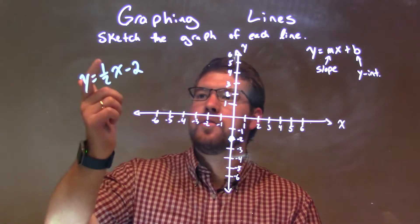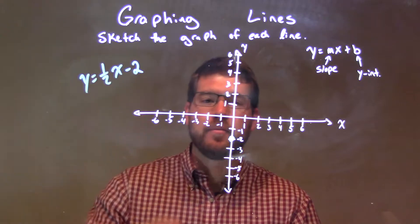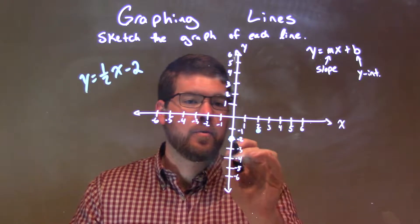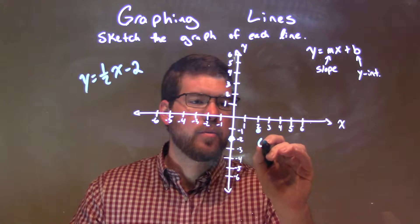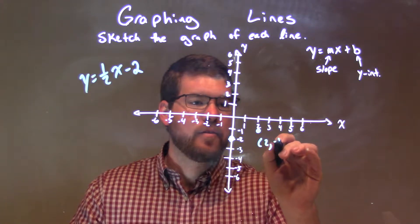Then it tells us our slope, our m-value, is one-half. So we go up one unit over two, and that corner point is two comma negative one.